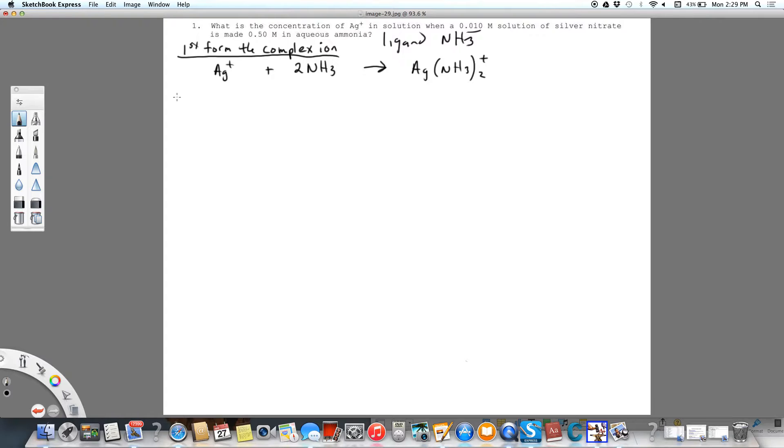So initially, or actually before the reaction, the concentration is 0.010 and that's from up here. That's what was given. Ammonia is 0.50 and then the complex hasn't formed yet, so that's going to be 0. So we're not setting this up as equilibrium yet. For mathematical purposes, we're going to figure out how much of the complex forms and then in the second step, we'll figure out what is the equilibrium concentrations of everything.